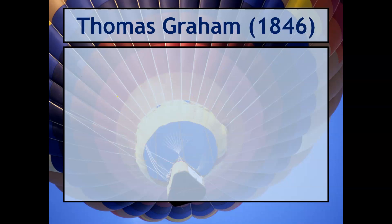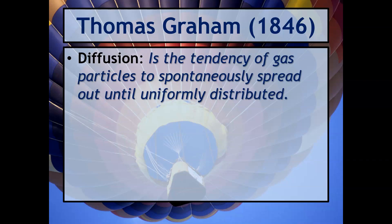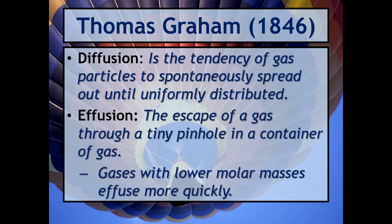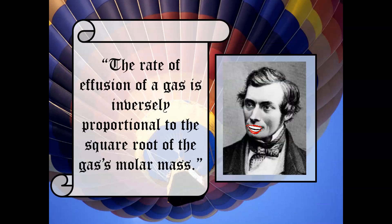Let's talk about Thomas Graham. In 1846, Thomas Graham started talking about something called effusion. You may be familiar already with diffusion — diffusion is the tendency of gas particles to spontaneously spread out until uniformly distributed. But effusion is the escape of a gas through a tiny pinhole in the container. Gases with lower molar masses tend to effuse more quickly because they can move more quickly. Graham's law states that the rate of effusion of a gas is inversely proportional to the square root of the gas's molar mass.